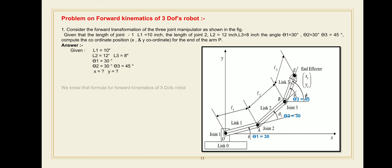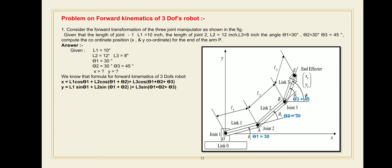We recall the formula for forward kinematics of a 3 degrees of freedom robot, already derived previously. With 3 links and 3 thetas: X is equal to L1 cos(theta 1) plus L2 cos(theta 1 plus theta 2) plus L3 cos(theta 1 plus theta 2 plus theta 3) — you add one extra angle and one extra link for the 3-DOF robot. Similarly for Y: Y is equal to L1 sin(theta 1) plus L2 sin(theta 1 plus theta 2) plus L3 sin(theta 1 plus theta 2 plus theta 3).